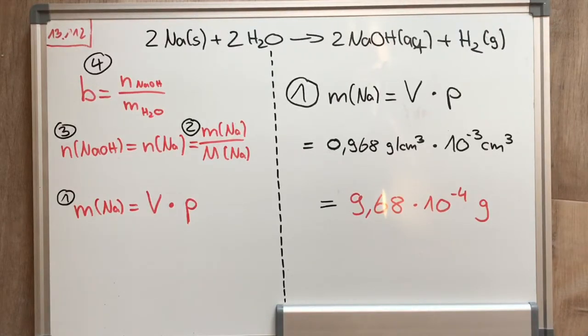The molar amount of sodium is calculated with the mass of sodium divided by the molar mass of sodium. And the mass of sodium is the volume multiplied by the density, which you can see on the right side. And this is our first step.